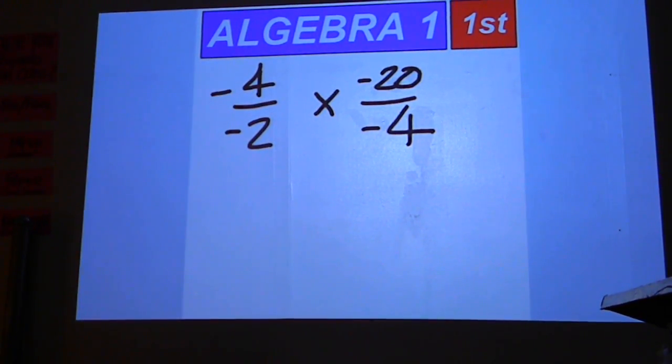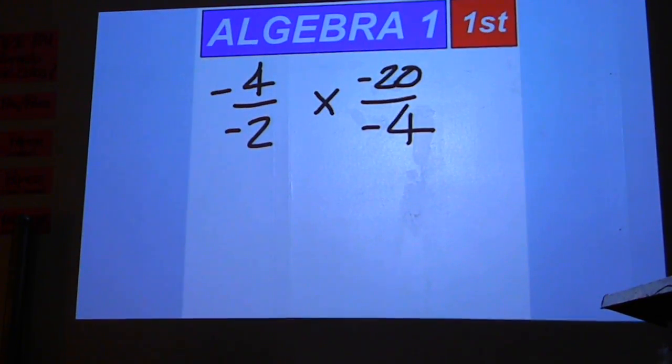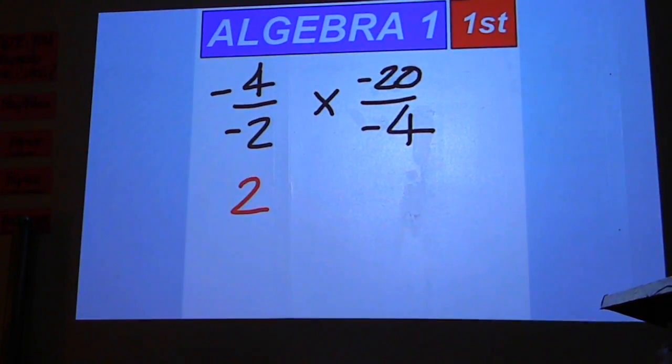In the first fraction, negative 4 over negative 2 is positive 2. Because the signs are the same, the answer is positive.